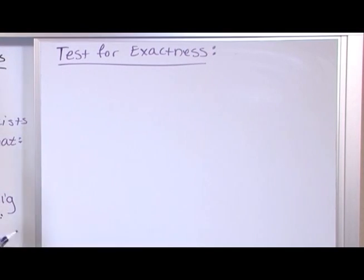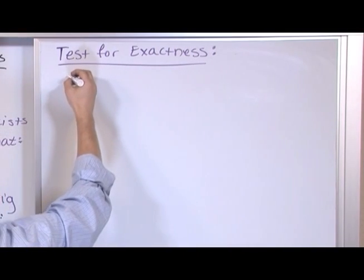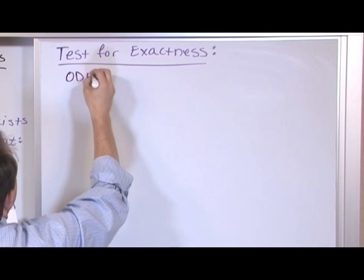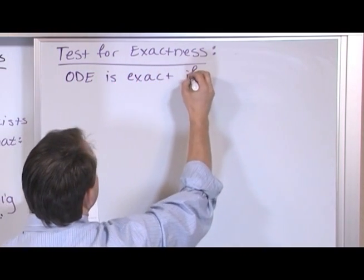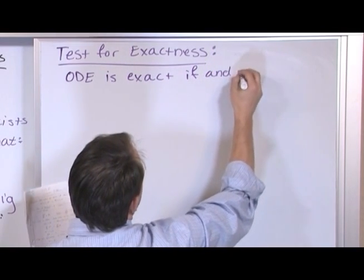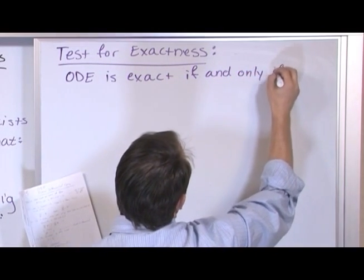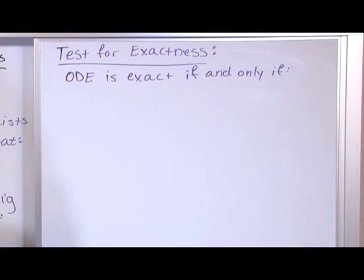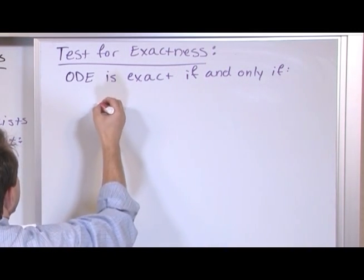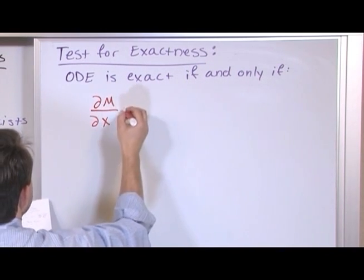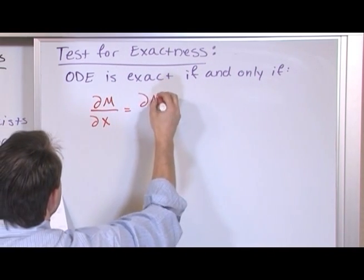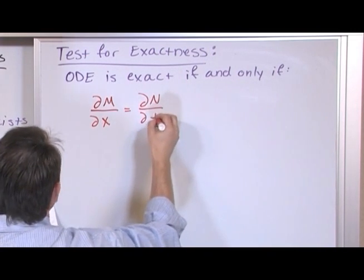The test for exactness is this. The ODE is exact if and only if the following thing is true. And this is something you're going to use a lot. The partial derivative of m with respect to x has got to be equal to the partial derivative of n with respect to t.